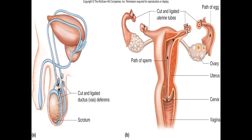Even though tubal ligation and vasectomy are corresponding procedures, there are major differences in how they're carried out. Tubal ligation requires general surgery — it is more invasive, more expensive, more dangerous, and involves more pain and longer recovery. A vasectomy, on the other hand, can be done on an outpatient basis in about 45 minutes, is safer, faster, less expensive, and has a shorter recovery time. Even though these procedures are comparable in purpose, it is far more preferable for the male to have a vasectomy than for the woman to undergo tubal ligation. That brings us to the end of this chapter.